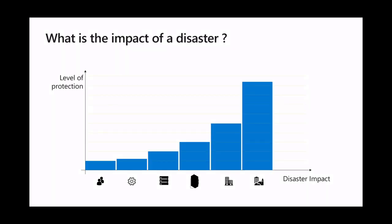As a summary, different types of disasters have different types of impact to an SAP system — from small impact such as a user accidentally deleting data, to a full metropolitan failure where an entire city becomes unavailable. We need to protect SAP systems in an appropriate way for each level of impact.